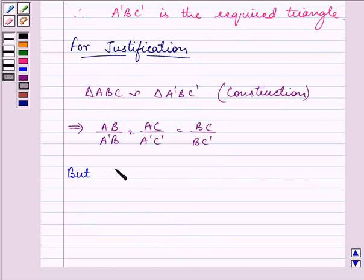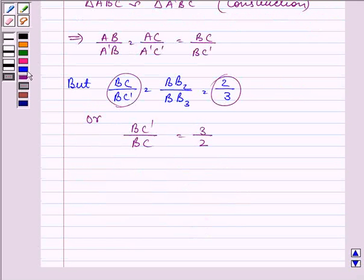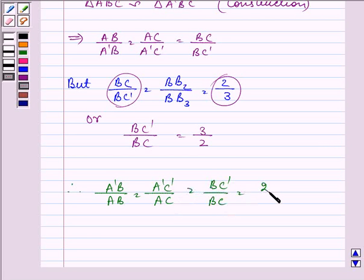But we also know that BC upon BC dash is equal to BB2 upon BB3 which is equal to 2 by 3, or we can say that BC dash upon BC, taking its reciprocal, is equal to the reciprocal of 2 by 3, that is 3 by 2. And therefore we can write that A dash B upon AB is equal to A dash C dash upon AC is equal to BC dash upon BC is equal to 3 by 2.